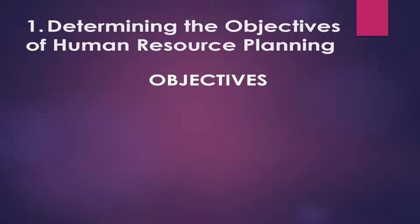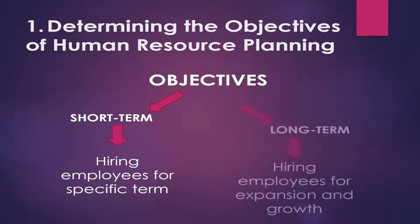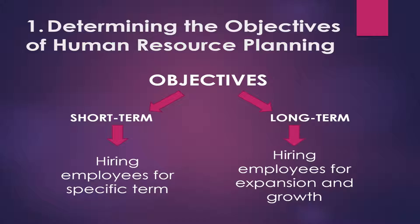The short-term objective could be like hiring a specific number of persons for a specified period. Long-term objective could be like hiring personnel for expansion and diversification, and training them for the same purpose. The objectives can vary across several departments in the organization, such as the personnel demand may differ in marketing, finance, production, and the HR department, based on their roles or functions.